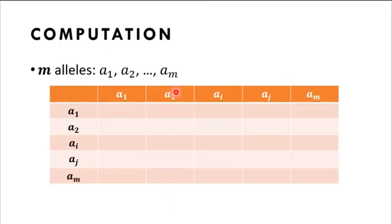Now, moving on to the computation part, consider a locus with M alleles. That is A1, A2, and so on until A sub M alleles.